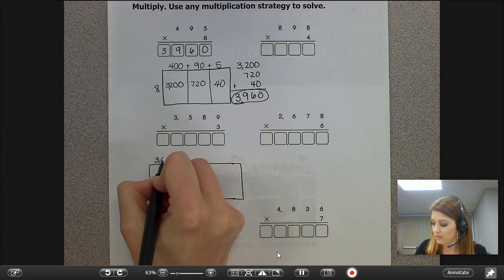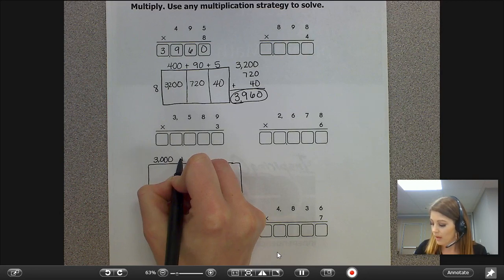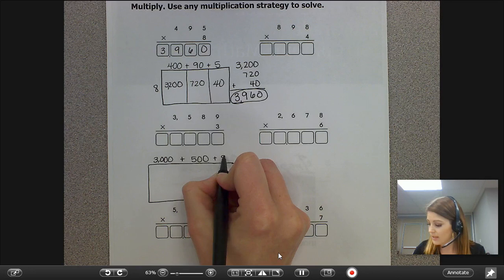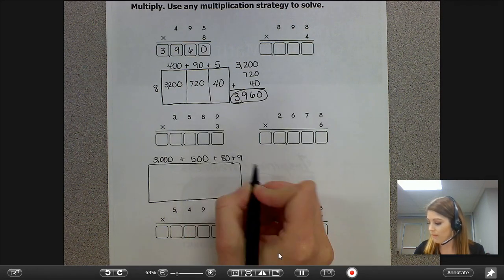The value of the 3 is 3,000. The value of the 5 is 500. The value of the 8 is 80 and the value of the 9 is 9.